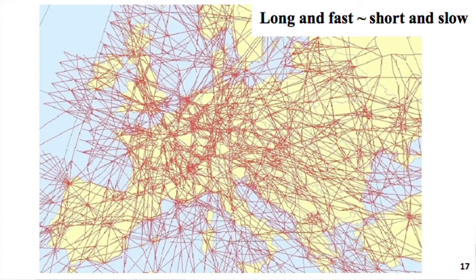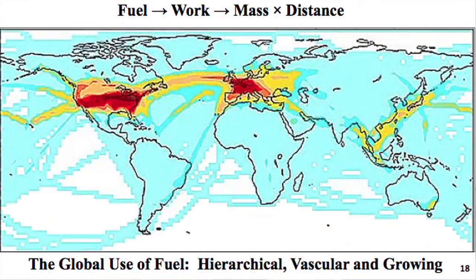Going back to the formula for urban design, now at a much greater scale — this is essentially the western half of Europe, from the Black Sea to the Atlantic. The long and fast are the air routes, shown here in red. The short and slow are the traversing of the yellow — the actual land. Imagine flying from London to Milan: it's about two hours. Those are the same two hours that you need to get out of the Milan airport, find a car, and cross the yellow on the way to the hotel on the beach. Long and fast — the same time as short and slow. Your mind jumps to even larger scales, and the largest that interests me is the globe.